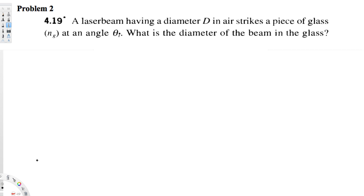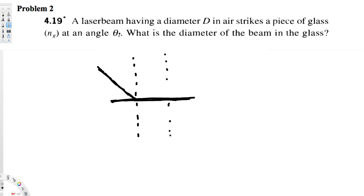We have a laser beam with diameter d. Let's draw our glass, and draw a normal line here and another normal. Another ray comes through and hits this normal. The perpendicular distance between these two rays should be d — that's what the diameter means. When we have two laser beams, the diameter between them is d.